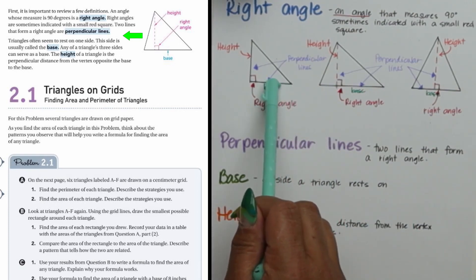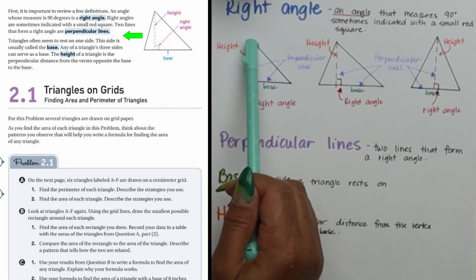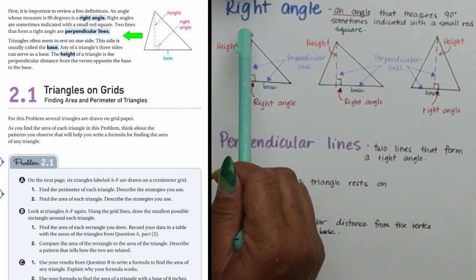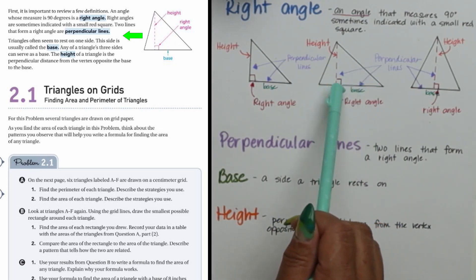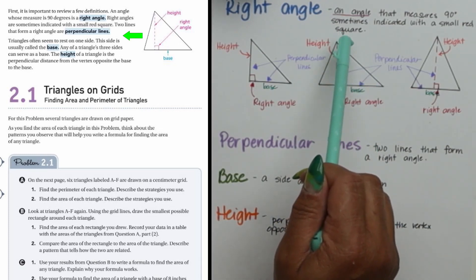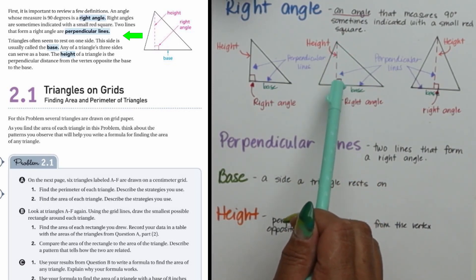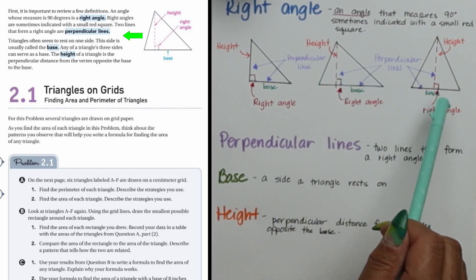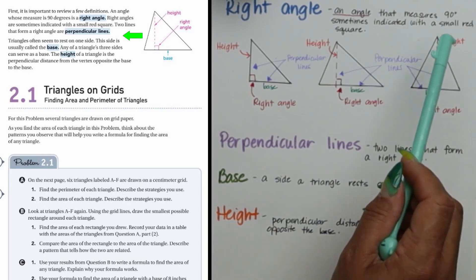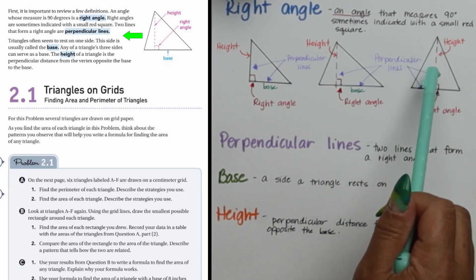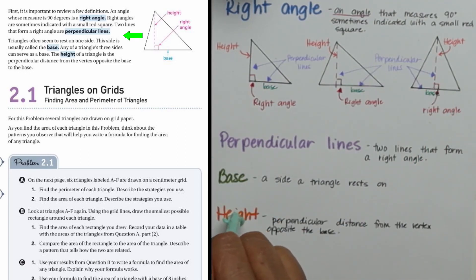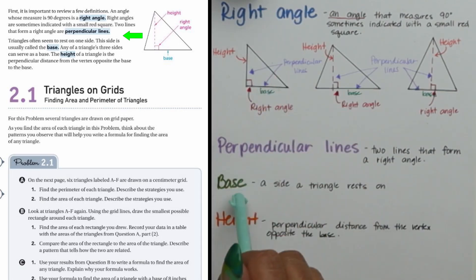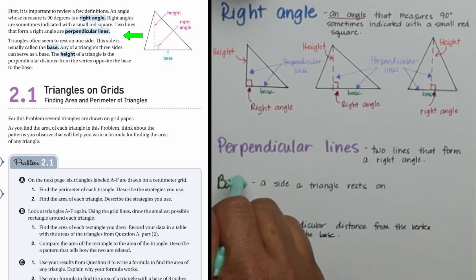Here's the base, and opposite it is this vertex — not the other two, but the one directly opposite that doesn't touch the base. Draw a line from that vertex at a 90-degree angle to the base — that's your 90-degree angle, and those two lines are perpendicular. The height is found by locating the vertex opposite the base and drawing a line that's 90 degrees from it. The base is the side where the triangle rests.